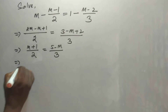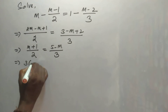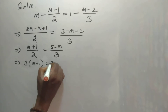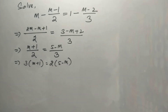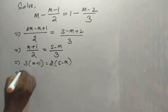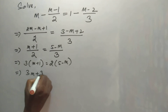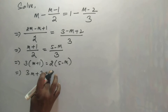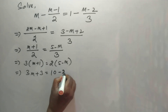Then by cross multiplication, 3 into m plus 1 is equal to 2 into 5 minus m. Now it is 3m plus 3 is equal to 10 minus 2m.